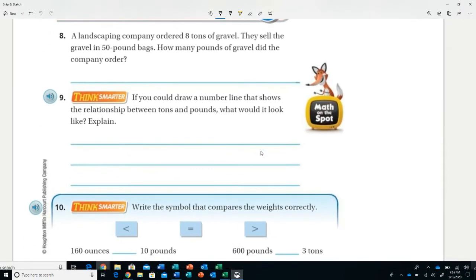The landscaping company orders eight tons of gravel. We know one ton equals 2,000 pounds. They sell the gravel in 50-pound bags. How many pounds of gravel did the company order? Well, I'll be honest with you, this whole 50-pound bags doesn't mean anything to me. That is extra information. I need to know that eight times 2,000 equals 16,000 pounds of gravel.